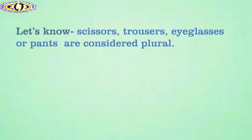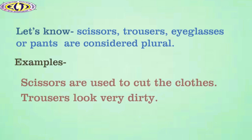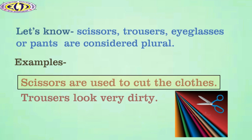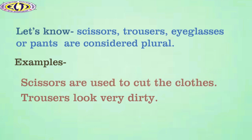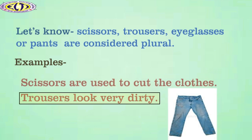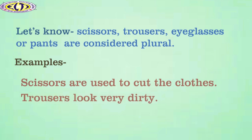Let us know this. The nouns scissors, trousers, eyeglasses, or pants are considered plural even though they are singular in reality, but they take plural verbs. For example, scissors are used to cut the clothes. Trousers look very dirty. In these sentences, the nouns scissors and trousers are treated as plural, so they take plural verb.